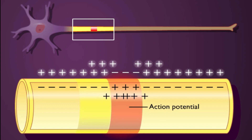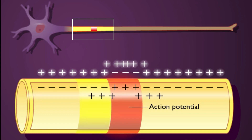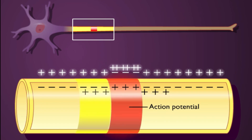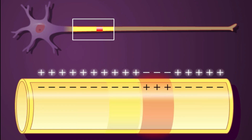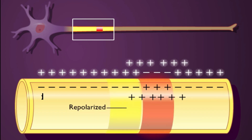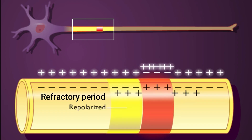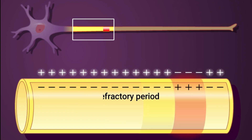Action potential propagation occurs in one direction because the recently depolarized area of the membrane is in absolute refractory period and cannot generate an action potential.